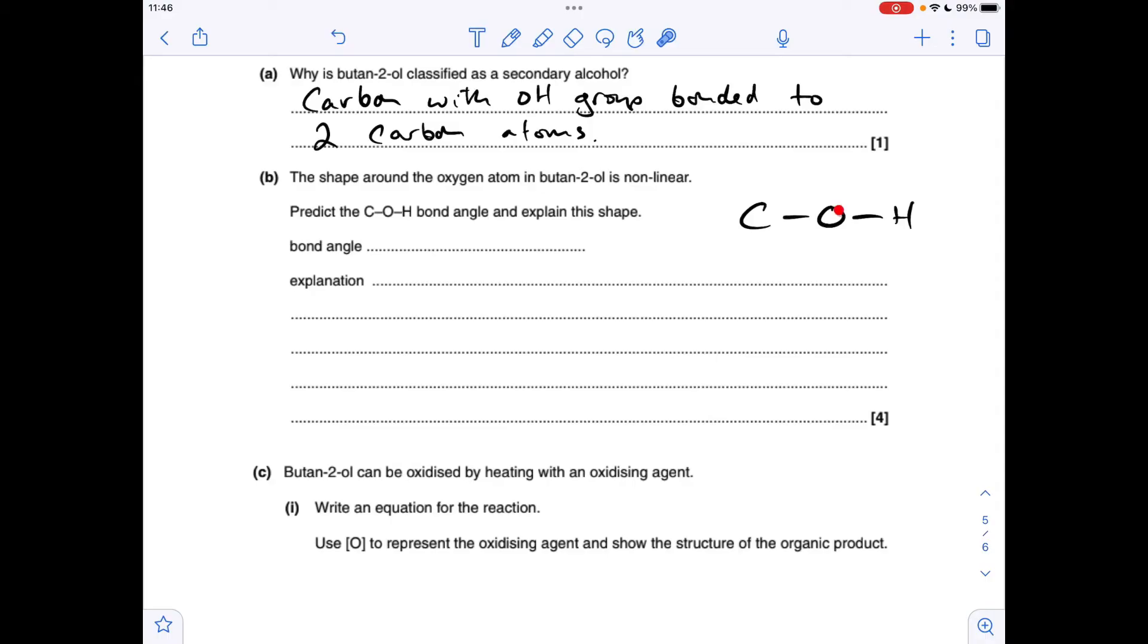Moving on to part B, so the shape around the oxygen atom in the alcohol group in any alcohol is non-linear. So why is that? Well, the thing to remember about this oxygen atom is it actually has two lone pairs on it. Oxygen's in group six, so it's using two electrons in these two bonds. It's got four left, so two lone pairs. So I'll do the explanation first and then put the angle in last.